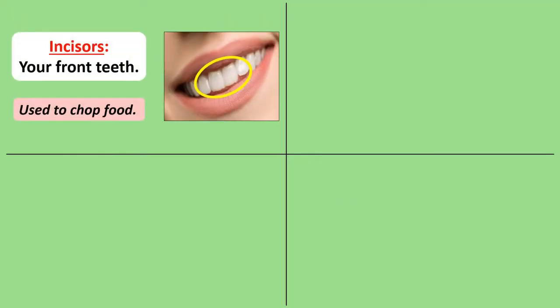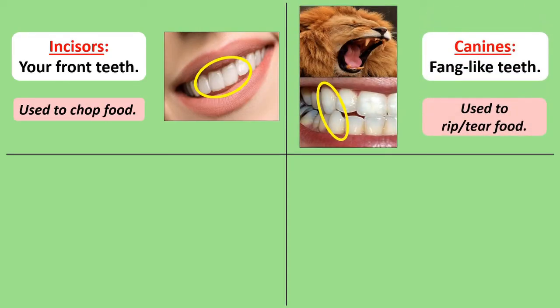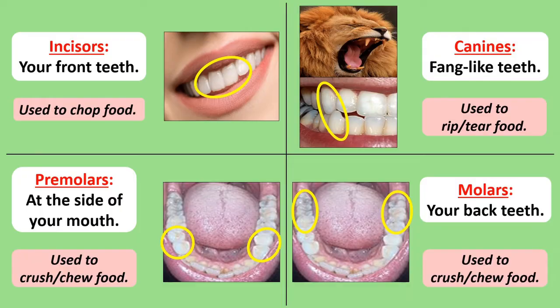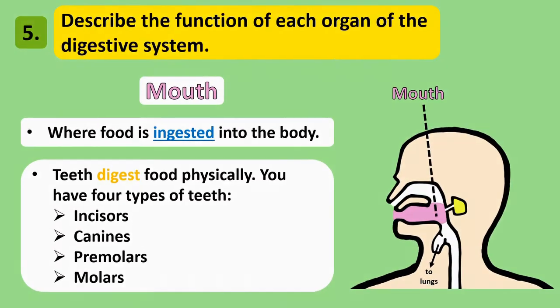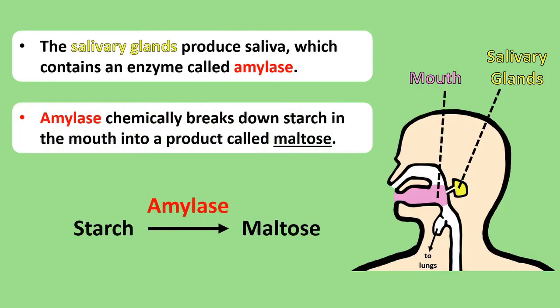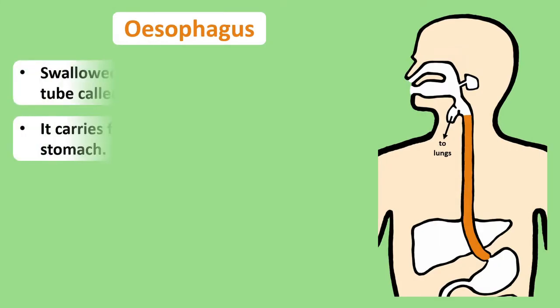Your large front teeth, both at the top and bottom of your mouth, are called incisors, and their job is to chop, chisel, or bite into food — think of your first bite of an apple. Canines are your fang-like teeth; you have four of these and they rip and tear into food. Premolars at the side of your mouth, and the larger molars to the back, both have the same function: to crush, grind, and chew food. Aside from digesting food with teeth, the mouth also digests food chemically with enzymes. The salivary glands, which produce saliva, also create an enzyme called amylase, and this mixture of saliva and amylase goes to your mouth, where the amylase digests starch down chemically into a smaller product called maltose.